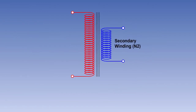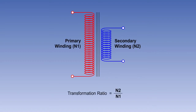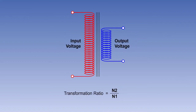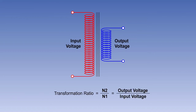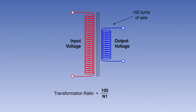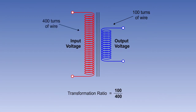The transformation ratio of a transformer is the ratio of the number of turns or coils of wire on the secondary winding, N2, to the number of turns of wire on the primary winding, N1. The transformation ratio is also the ratio of the output voltage to the input voltage. A coil with 100 turns of wire on the secondary winding and 400 on the primary will have a transformation ratio of 100 divided by 400, or 0.25.